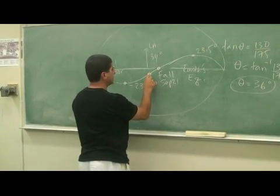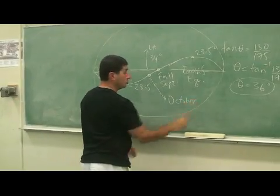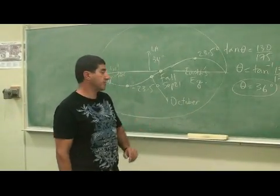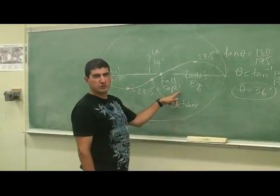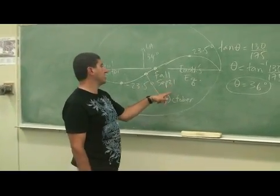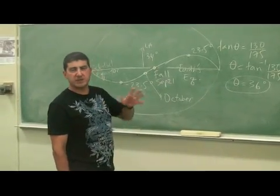So roughly speaking, we could do more exact calculations, of course, but roughly speaking, we could say the sun, it's been about one week or one and a half weeks from September 21. So the sun's angle roughly is about negative one, negative two degrees.